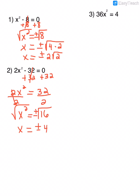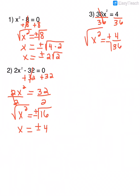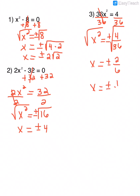For number three, x squared is not by itself, so divide both sides by 36. Now x squared is by itself, so take the square root of both sides plus or minus. Both the numerator and denominator of the resulting fraction are perfect squares: the square root of 4 is 2 and the square root of 36 is 6. Simplifying the fraction gives plus or minus 1 third.